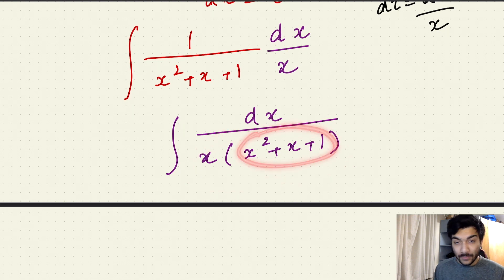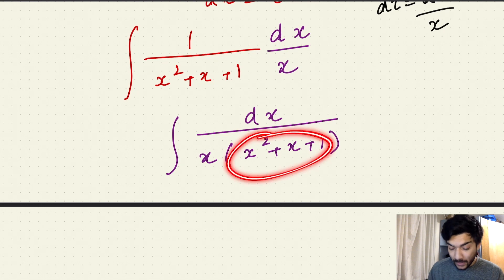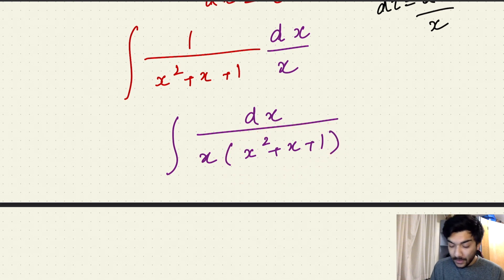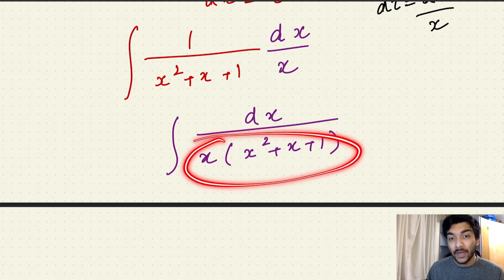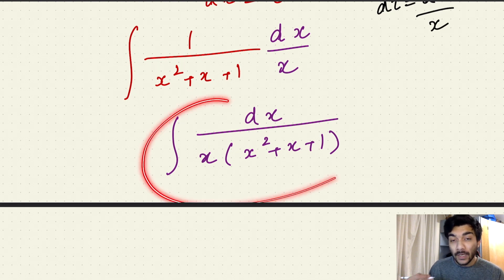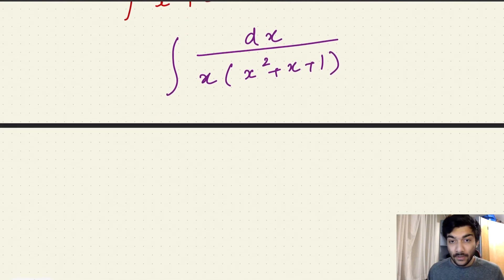Now your integral has been simplified to just calculating the integral of dx upon x times (x squared plus x plus one). You can see two factored-out terms in the denominator. If you calculate the discriminant of this quadratic expression, the discriminant is less than zero, which means this quadratic has no real roots and cannot be factorized further. So we have two terms in the denominator that cannot be factorized further, and we can use partial fractions here.